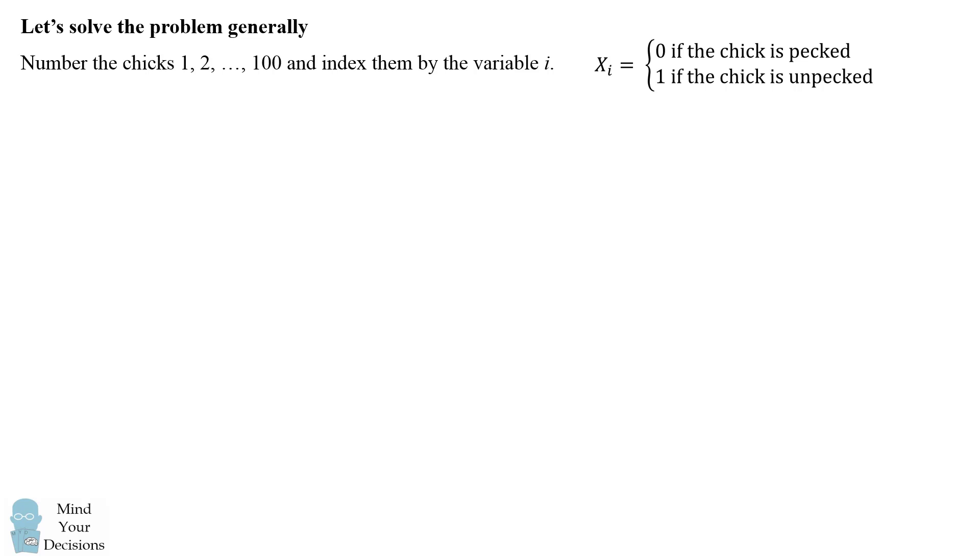Let's define the probability a chick pecks left to equal p and the probability a chick pecks right to equal 1-p. These are complementary events because we know the chick is pecking in some direction.